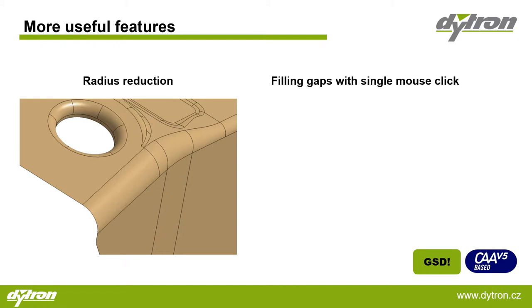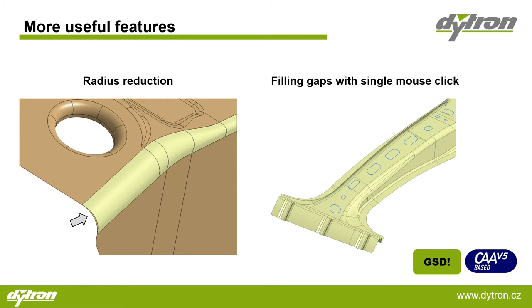There are other useful features contained within the Formability Shaper module. For instance, the Radius Reduction, which serves users so that no breaking friction will occur. Another big feature is simple filling of holes with a single mouse click. There won't be an example for this, but it's another useful feature to take into consideration.